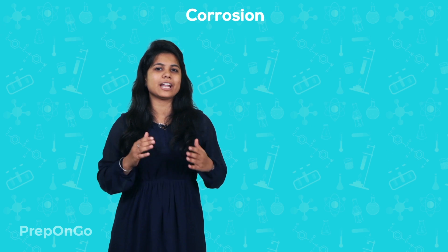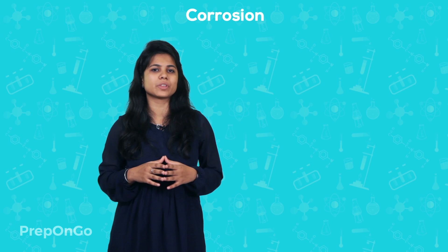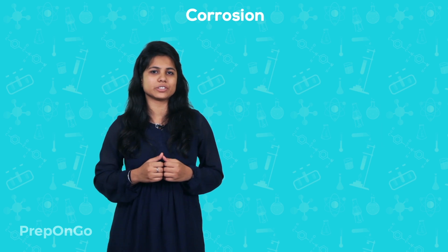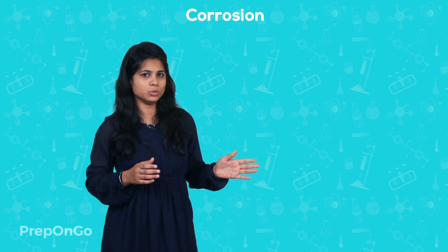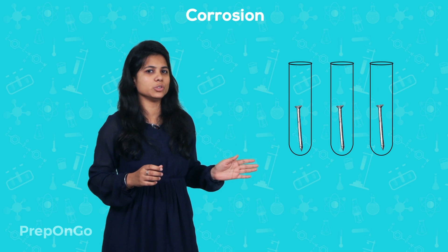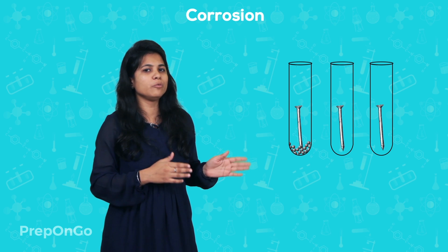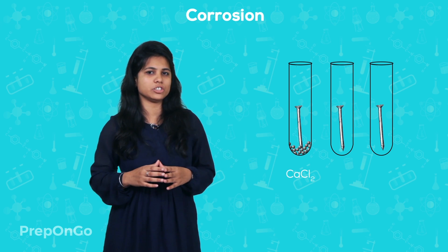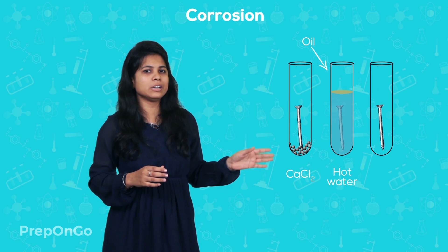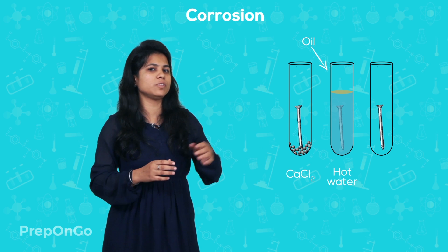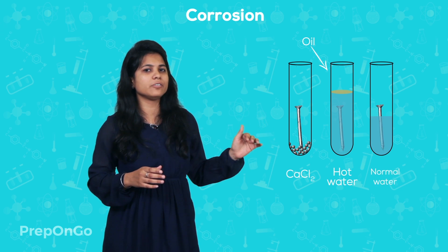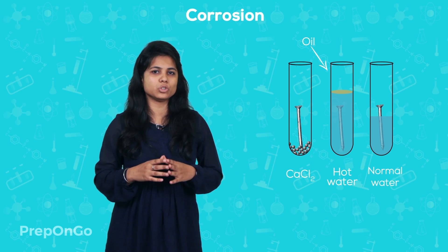Iron rust is something that we have seen in our day-to-day life. Let us perform an activity to find out the conditions under which iron rusts. Take three test tubes and put an iron nail in each of them. In the first test tube, put anhydrous calcium chloride, which is a moisture absorbing agent. In the second test tube, put hot distilled water and pour some oil to cut off the air supply. In the third test tube, put normal water with the nail half dipped in water and the upper portion exposed to air.